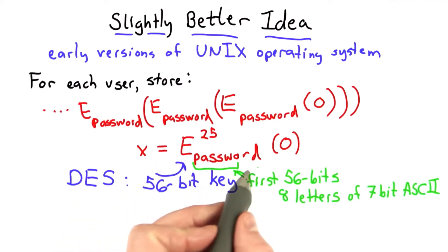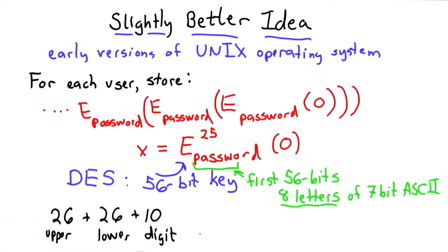And the key was generated from the password by just cutting it off. Take the first 56 bits. So with the 56-bit key, the first 56 bits of the user's password are used. If this was encoded as 7-bit ASCII, that was only 8 letters.